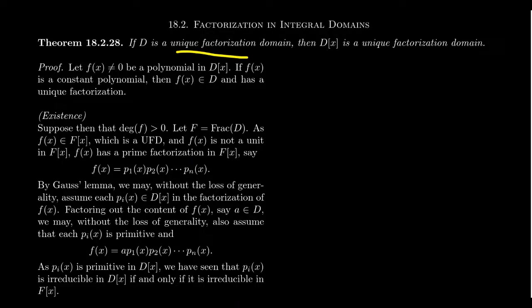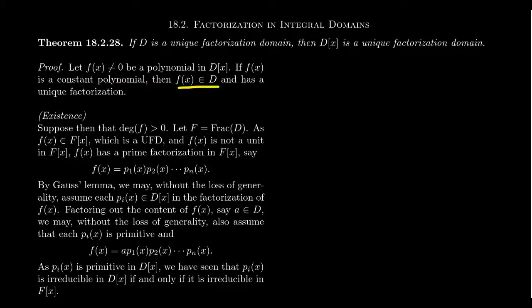To be a unique factorization domain, we have to prove that every non-zero, non-unit element of D[X] has a unique factorization — we must prove both existence and uniqueness. We don't worry about zero since zero doesn't have a unique factorization. We know from previous work that any unit in D[X] actually belongs to D itself; units must be constant polynomials.